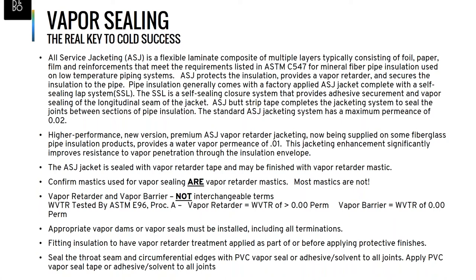ASJ is a laminate composed of foil, reinforcing scrim, and bleached kraft. Its perm rating is 0.02 perms. Knopf's ASJ Plus incorporates a polypropylene film exterior, offering a perm rating of 0.01 perms — doubling the water vapor resistance of standard ASJ and becoming the industry standard. Matching tapes complete sealing of seams for both types. Vapor retarder mastics exist to help complete the vapor retarding system. It is very important to confirm that the mastic being used is actually a vapor retarder mastic, since many are not.